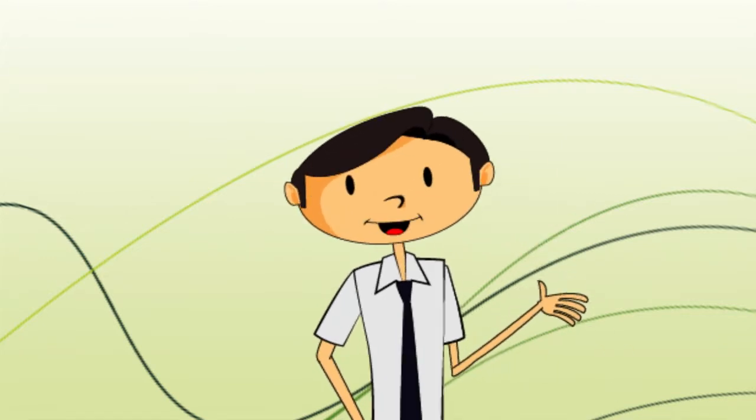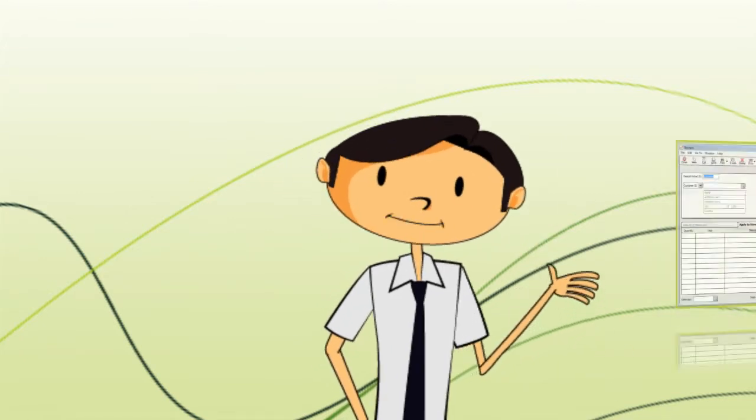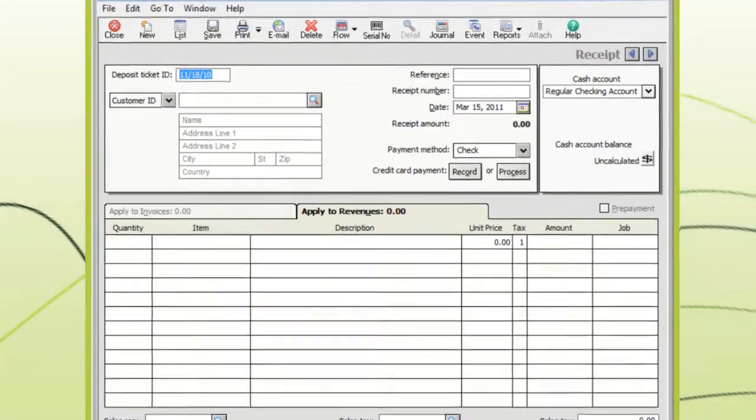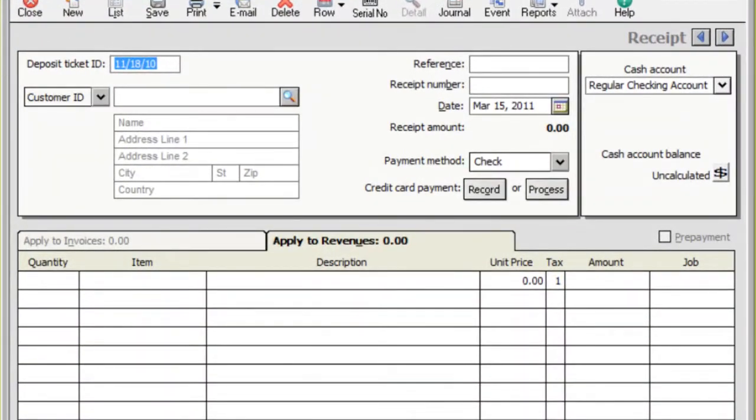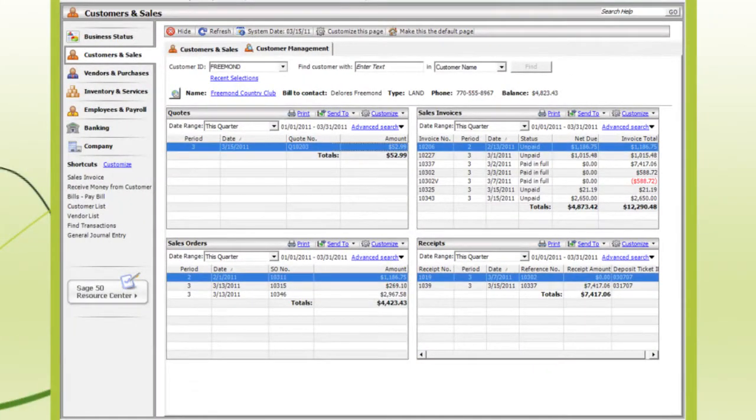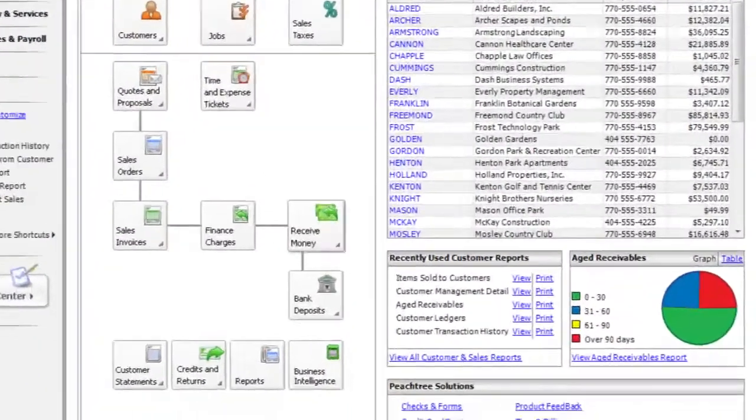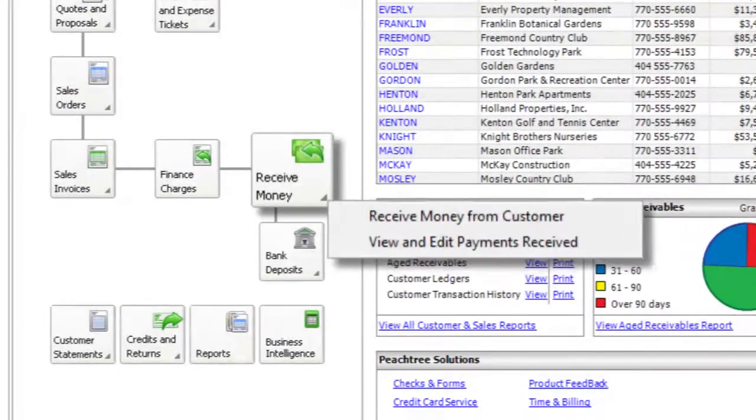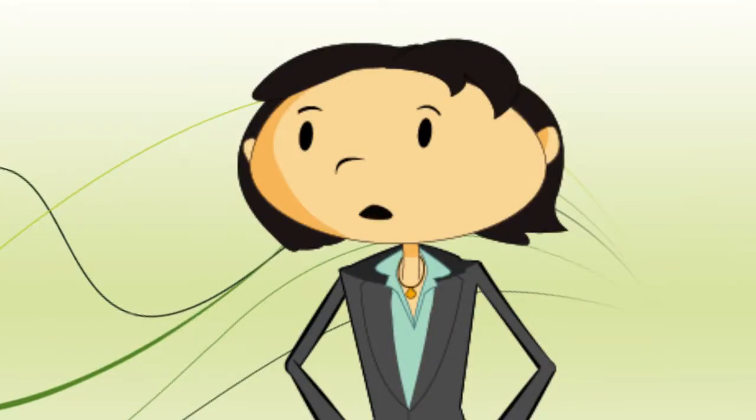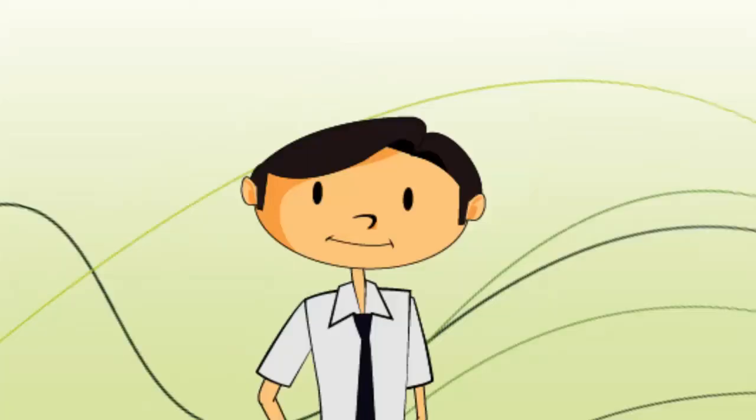Okay Kim, so once I collect the cash, then what? You can use the Receipts window to enter money you collect from your customers. And I can get to the Receipts window from the Customer Management tab, right? That's right. Or you can go to Customers and Sales, Receive Money, then Receive Money from Customer. That's cool. You can also process credit cards and apply money you've collected to outstanding invoices.